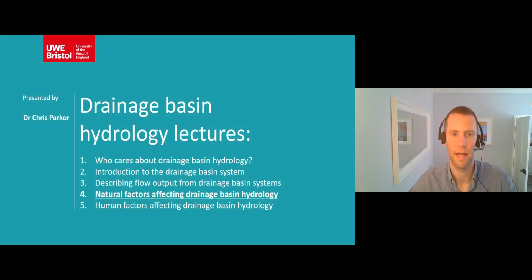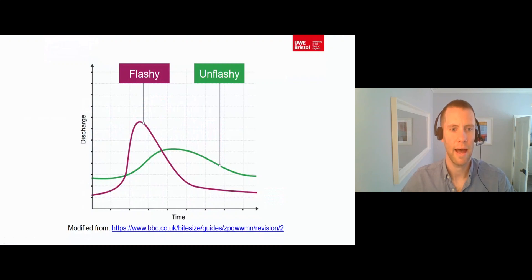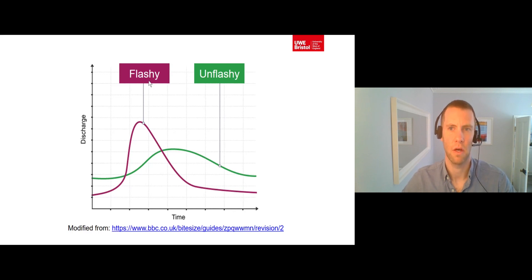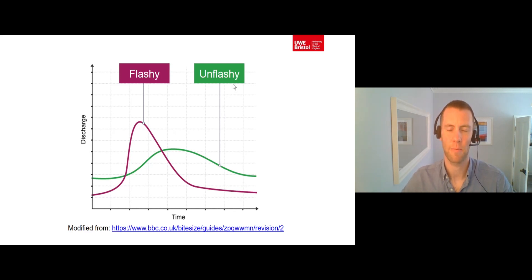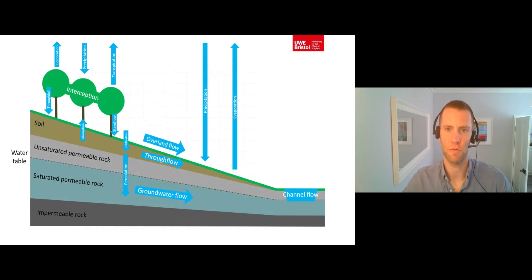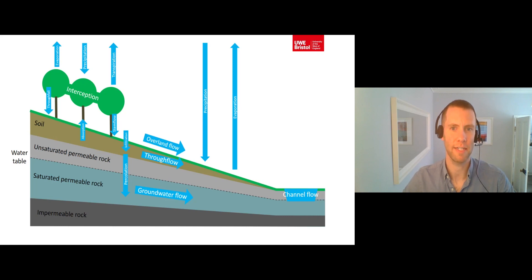Okay, let's get started with lecture four: natural factors affecting drainage basin hydrology. As we explored in the previous lecture, some drainage basins have high levels of storm flow and low levels of base flow and are known as flashy or responsive catchments, while some have low levels of storm flow and high levels of base flow and are known as unflashy or unresponsive catchments. Most drainage basins lie somewhere between these two extreme states, and how flashy a drainage basin is depends on both natural and human factors. We can explore the natural factors responsible by examining each stage of the drainage basin hydrological cycle, which we covered in detail in lecture two.